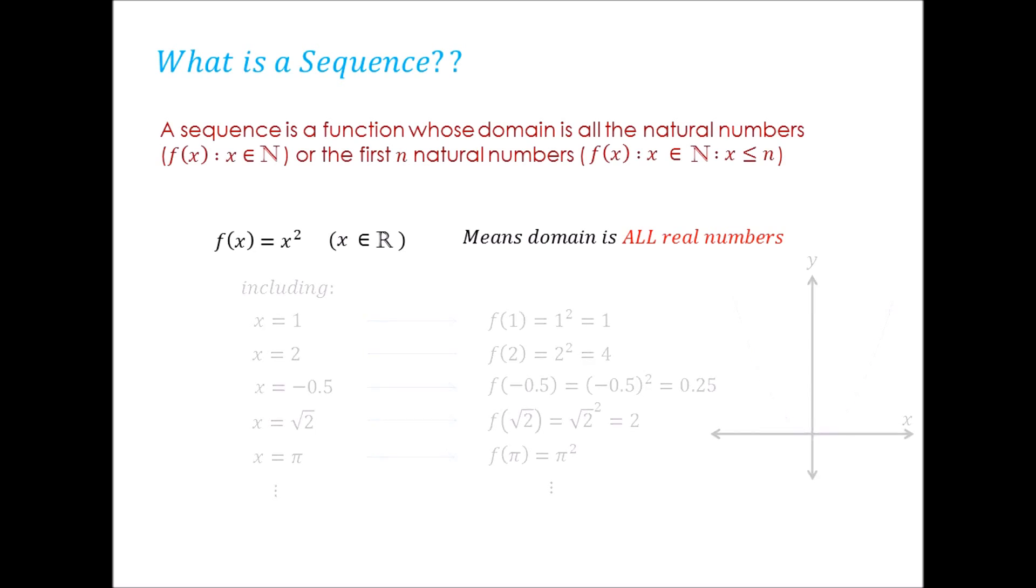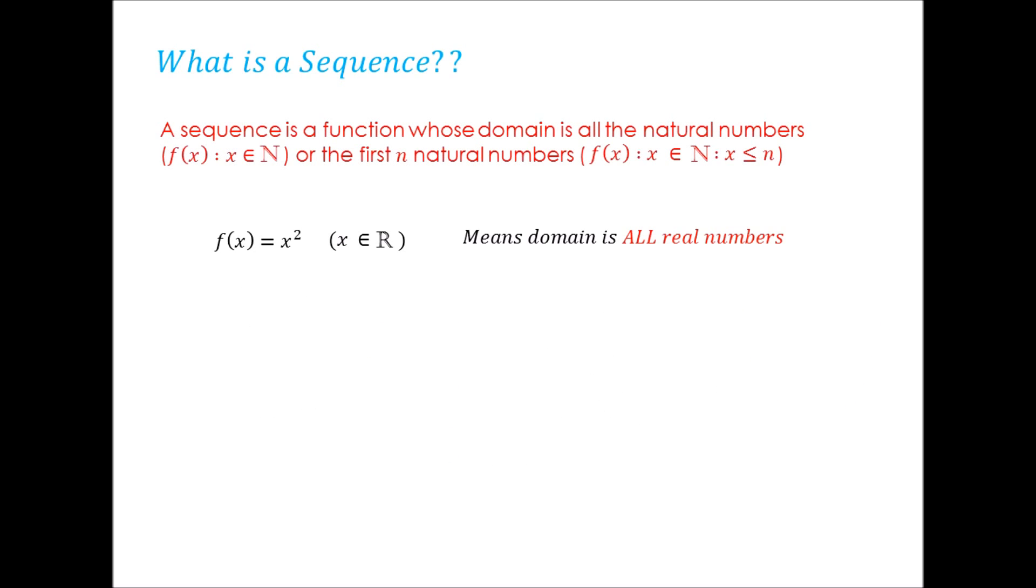However, going with the sequence definition, a sequence's domain is only natural numbers instead of real. But what are natural numbers? They are basically numbers that are used for counting such as 0, 1, 2, 3, 4, and so on. The positive integers.